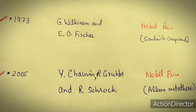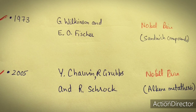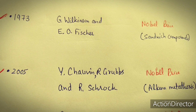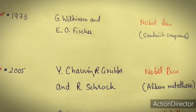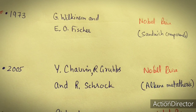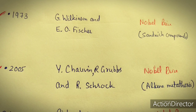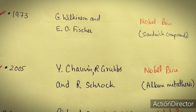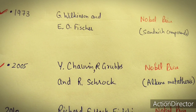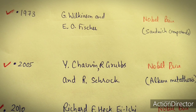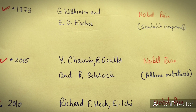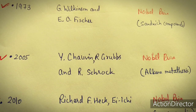The third Nobel prize in organometallics was achieved in 1973 by Geoffrey Wilkinson and E.O. Fischer for their work on sandwich compounds. So: first in 1912, second in 1963, and just ten years later in 1973, another Nobel prize came to organometallic chemistry.